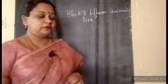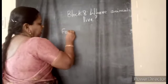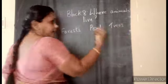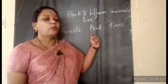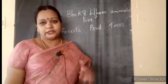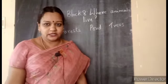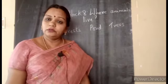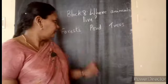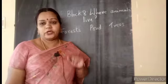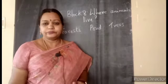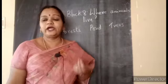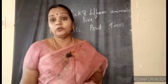As usual we start with an activity. You can do it on a rough paper or rough book. Three different places on the earth: forest, pond, and trees. Just pause and write two or three animals which you can find in a forest, two animals which you can find in a pond, and two animals which you can find on the trees.